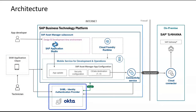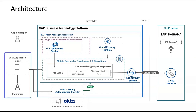SAP Asset Manager users enter their credentials into a form generated by the identity authentication tenant. Once the onboarding process is completed, an access token is automatically granted to the users. When SAP Asset Manager accesses service resources, the token is used for authentication.